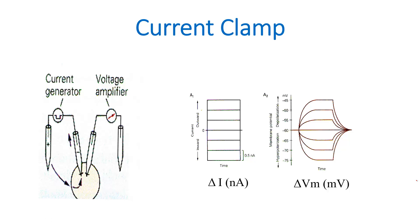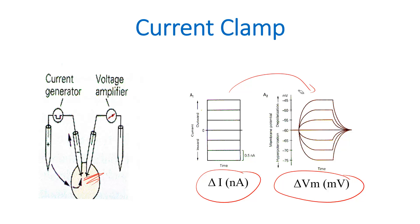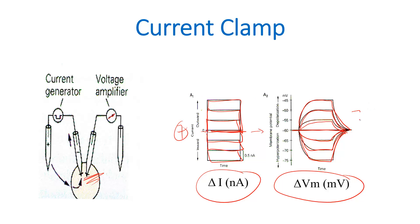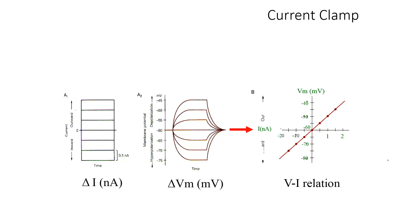With the current clamp technique, the experimenter clamps the amount of current being injected into a cell at a chosen value so that a constant amount of current is injected. The experimenter then measures how much the membrane potential changes due to this current flow. In this example, we have zero current being injected and then different amounts of current being injected, and for each of those currents the researcher measures how much the membrane potential changed. So we have seven different currents injected and seven different membrane potential changes recorded, which can be plotted on an XY graph.